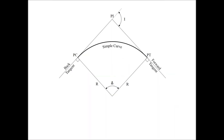The primary elements of a simple curve include: the point of intersection, which is the location where the back and forward tangents intersect; the intersecting angle i, which is the deflection angle at the point of intersection; the radius r, which is the length of the line from the center of the circle to the perimeter — the radius describes the sharpness of the curve; and the PC, which is the point of curvature, the point where the circular curve begins and the highway leaves the tangent. The back tangent is at a right angle to the curve at this point.